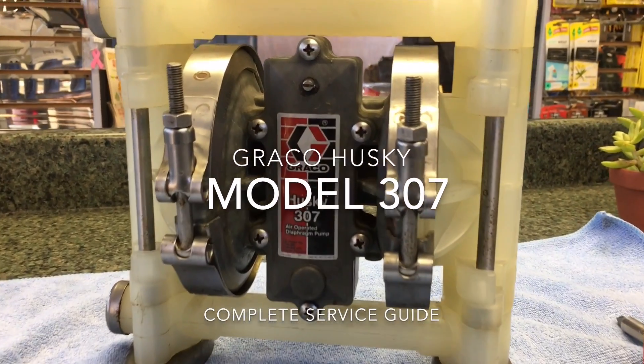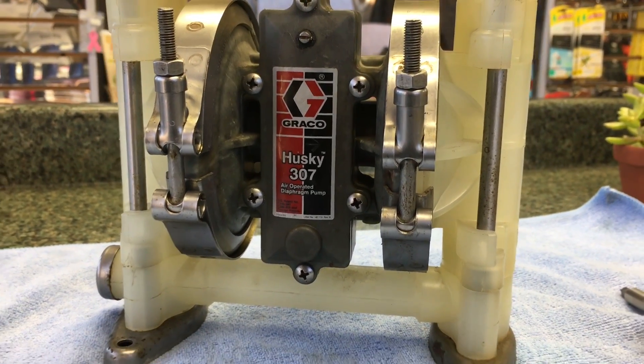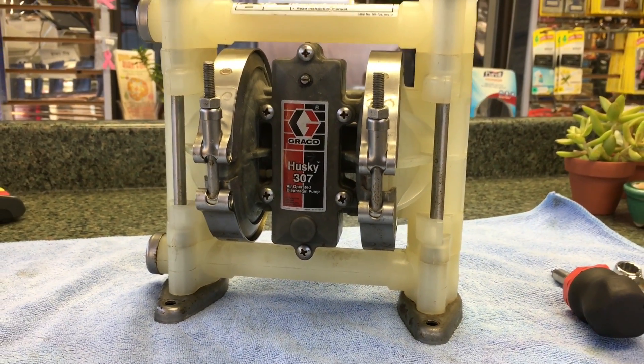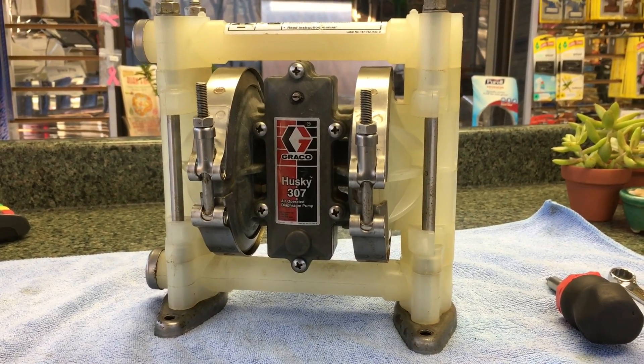Okay, so here in front of us we have a Graco air diaphragm pump. It happens to be a Husky model 307. In this video we're going to be showing you how to rebuild these, but also how to diagnose these so you don't just go and order every replacement part.